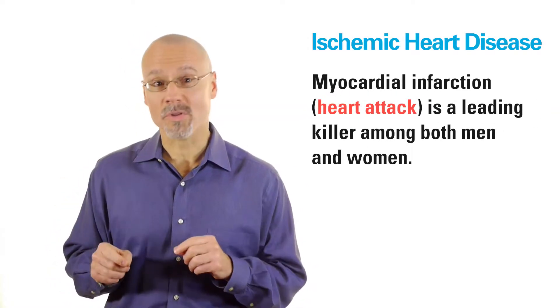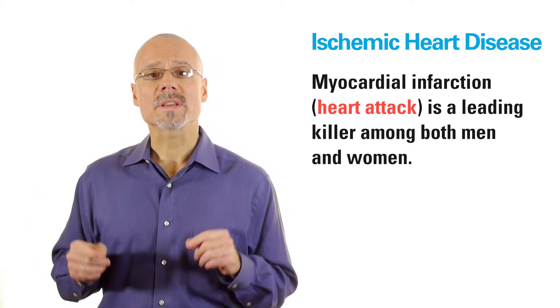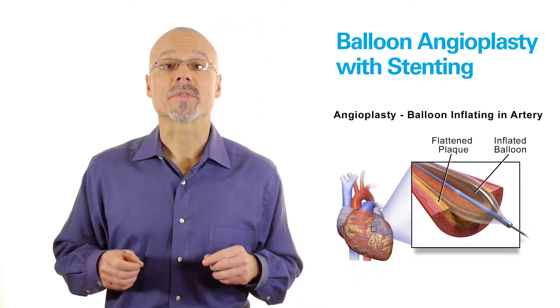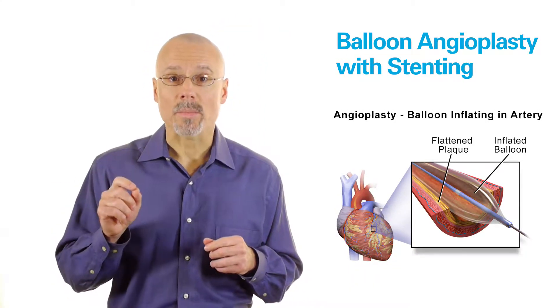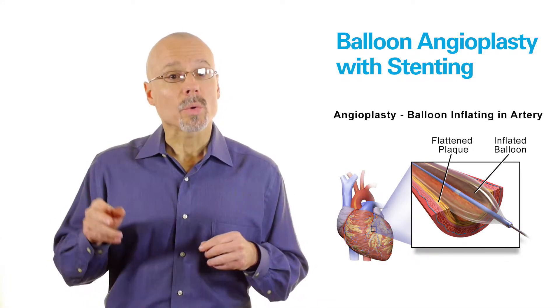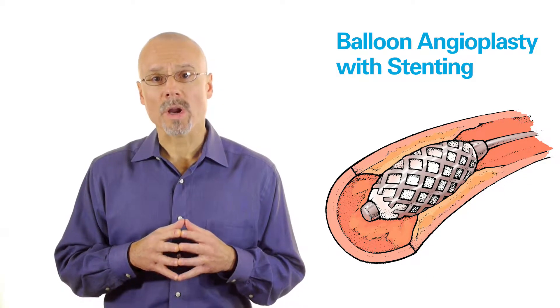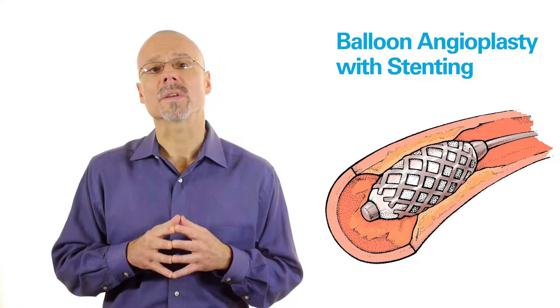Ischemic heart disease, which includes myocardial infarction, a fancy term for heart attack, is a leading killer among both men and women. Fortunately, doctors were able to open Brian's blocked arteries using a procedure called balloon angioplasty with stenting. This surgery involves guiding a special tube with a tiny balloon at the top through a blood vessel in an arm or a leg and into the affected heart artery. When the balloon reaches the blockage, it is inflated several times. This process compacts the plaque, widens the opening in the artery, and increases blood flow to the heart. Afterward, a wire mesh tube called a stent is inserted to keep the artery open.